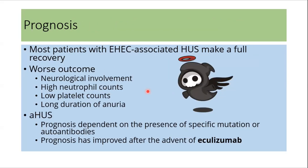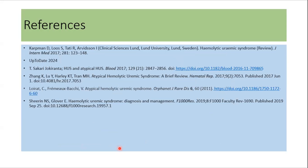Most patients with EHEC-associated HUS make a full recovery. Worst outcomes occur in patients with neurological involvement, high neutrophil counts, low platelet counts, and long duration of anuria. In atypical HUS, prognosis is dependent on the presence of specific mutations or autoantibodies. However, prognosis has significantly improved after the advent of eculizumab.